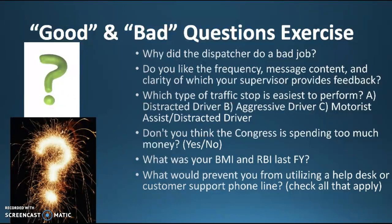Fifth bullet: 'What was your BMI and RBI last FY?' BMI is body mass index, RBI is runs batted in, and FY is fiscal year — but you'd have to know all those acronyms to even understand the question. You don't want to use so much jargon that respondents get confused or skip the question. The last one: 'What would prevent you from utilizing a help desk or customer support phone line? Check all that apply.' That's actually a decent question — you just want to make sure you're prepared for the person who checks all the boxes and know what to do with that.